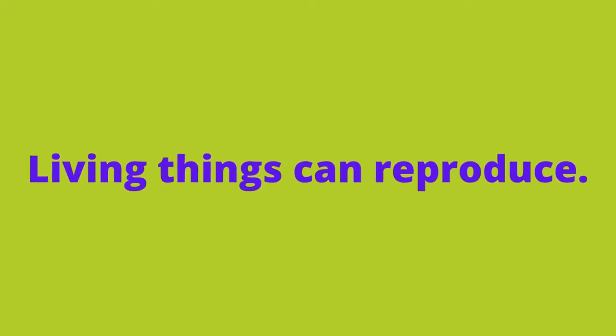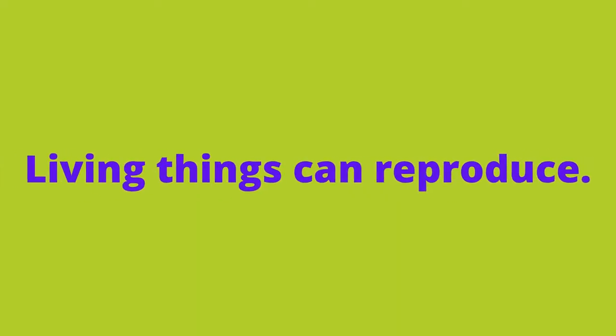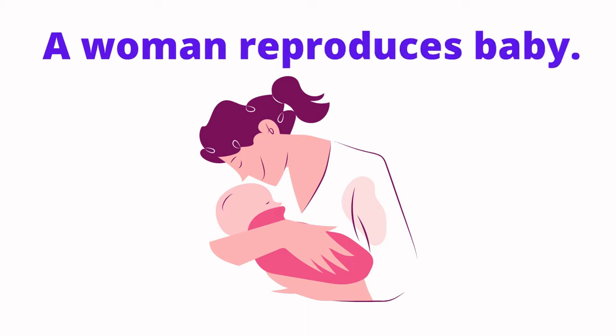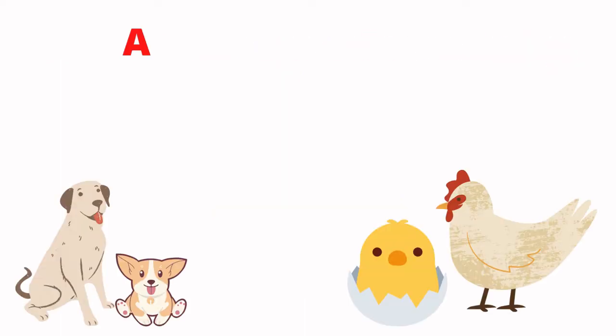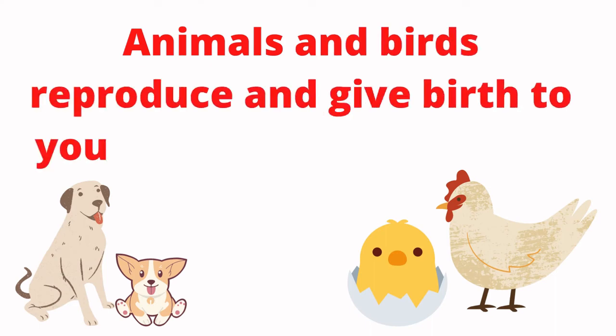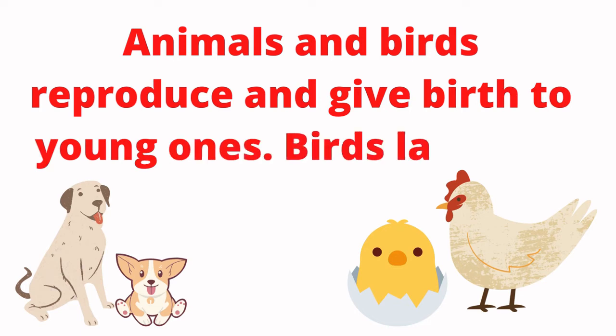Living things can reproduce. A woman reproduces baby. Animals and birds reproduce and give birth to young ones. Birds lay eggs.